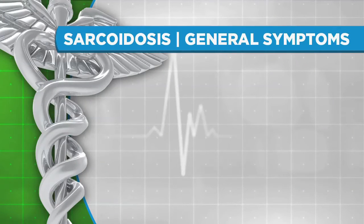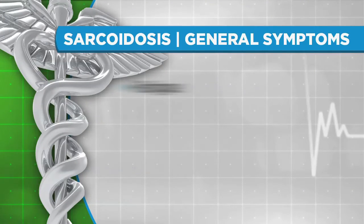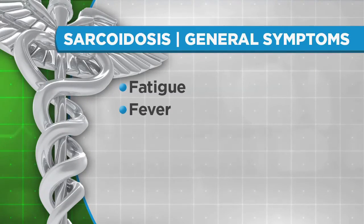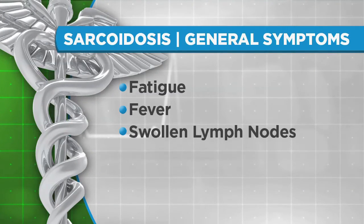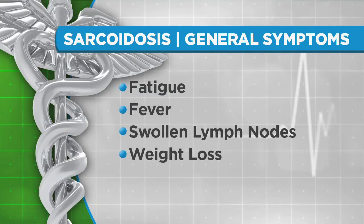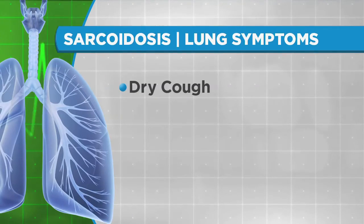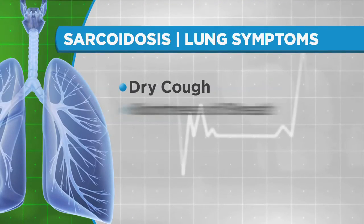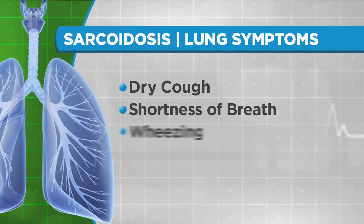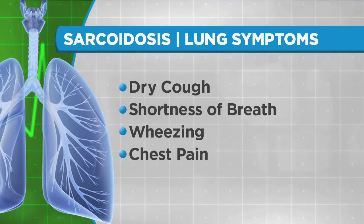General symptoms of sarcoidosis include fatigue, fever, swollen lymph nodes, and weight loss. Lung symptoms include persistent dry cough, shortness of breath, wheezing, and chest pain.